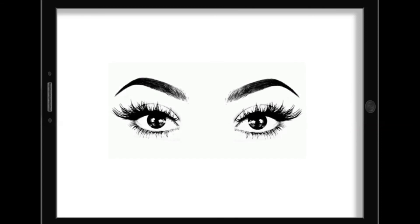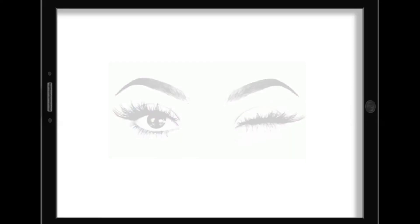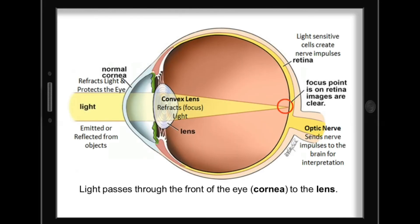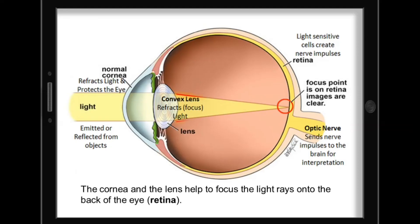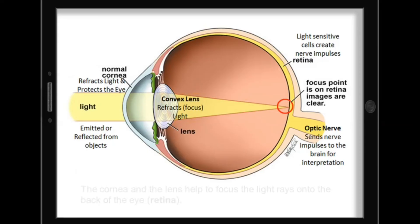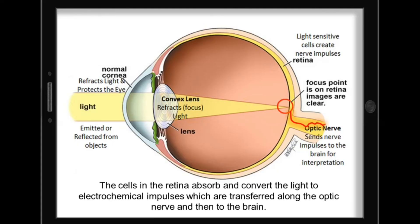Perhaps the most common use of lenses would be the lenses in our eyes. Light passes through the front of the eye to the lens. The cornea and the lens help to focus the light rays onto the back of the eye. The cells in the retina absorb and convert the light to electrochemical impulses which are transferred along the optic nerve and then to the brain. The brain corrects the orientation of the image formed at the retina since it is inverted.